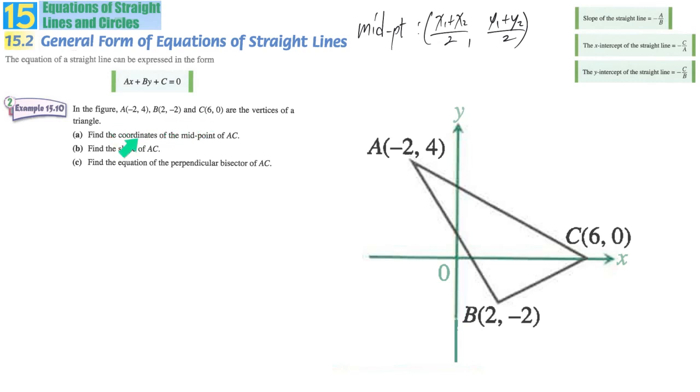They give you three points and then the first part is to find out the midpoint of AC. We just focus on this point A and this point C.